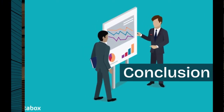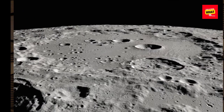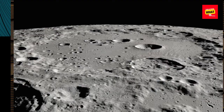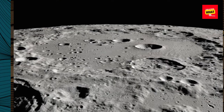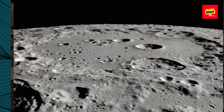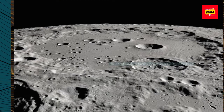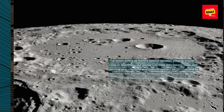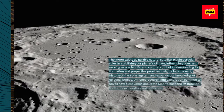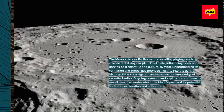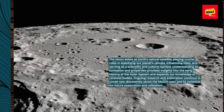The Moon exists as Earth's natural satellite, playing crucial roles in stabilizing our planet's climate, influencing tides, and serving as a scientific and cultural symbol.